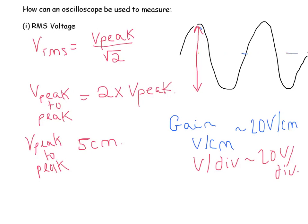So to convert the V_peak to peak we measure on an oscilloscope to the actual, you take the 5 centimetres, multiply by the gain, so we're going to use the one we used in the example, 20 volts per centimetre. And that would give you a V_peak to peak equal to 100 volts.